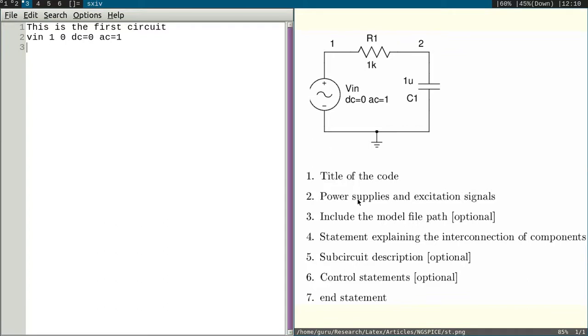Third one, it says include the model file path. In this circuit we do not need any model file - that is required only if you are using a transistor, a diode, MOSFET. Here we are not using any such devices. We do not need a model file here, so we skip this statement.